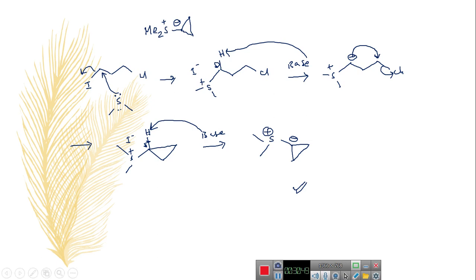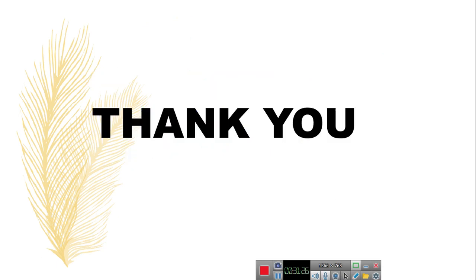Sulfur ylides generally have different kinds of applications in organic synthesis. The applications discussed so far include the preparation of epoxides, aziridines, cyclopropane derivatives, and oxospirane derivatives using sulfur ylides. Additionally, sulfur ylides can undergo rearrangements and there are some different name reactions involving sulfur ylides, which will be discussed in the next video. Thank you.